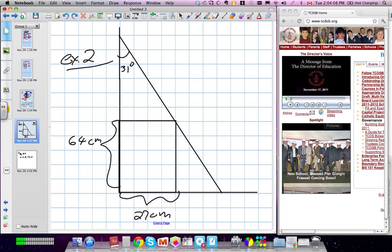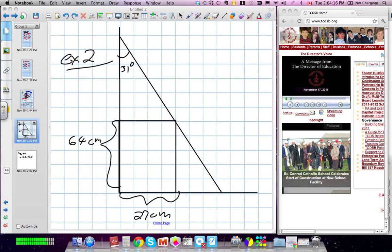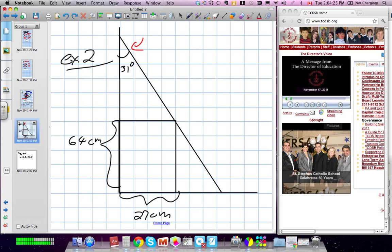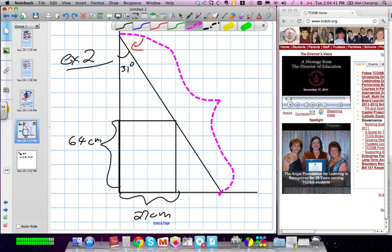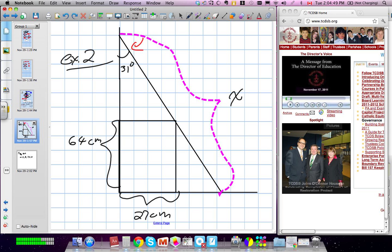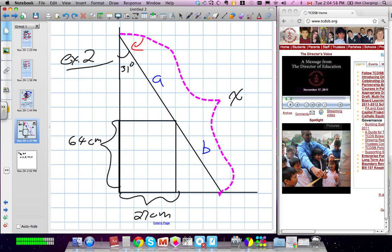Second example says there's a ladder leaning against a wall. The angle the ladder makes with the wall is 31 degrees. The ladder is in line with a box, and the box is 64 centimeters tall, 27 centimeters wide. They want us to find the entire length of this ladder. We need to break this ladder into two pieces, piece A and piece B.